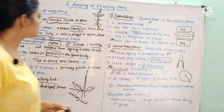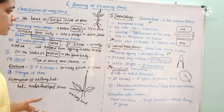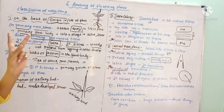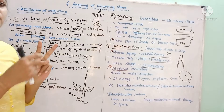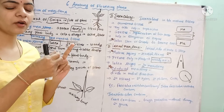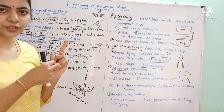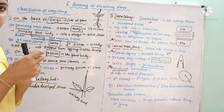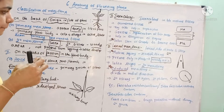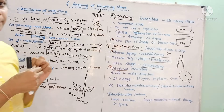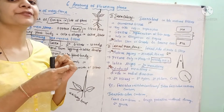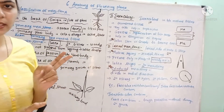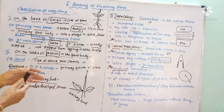These meristematic tissues can be classified based on two reasons. One is based on origin in the life of the plant, and the second reason is based on the position of the meristematic tissue.